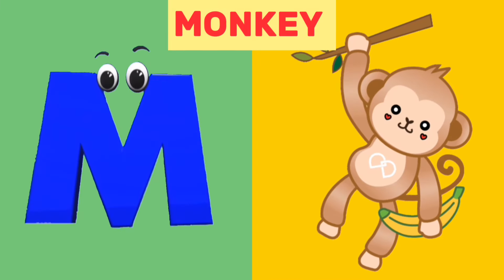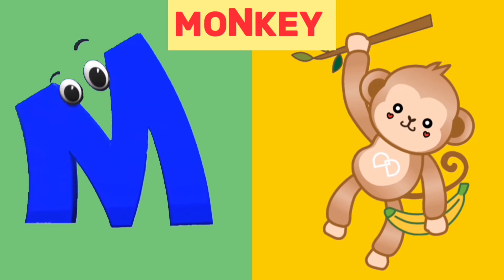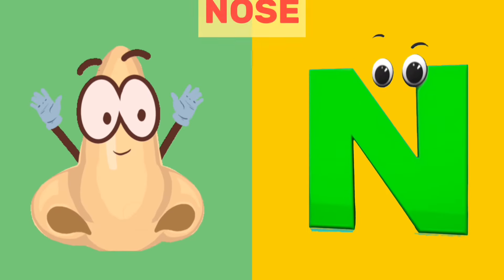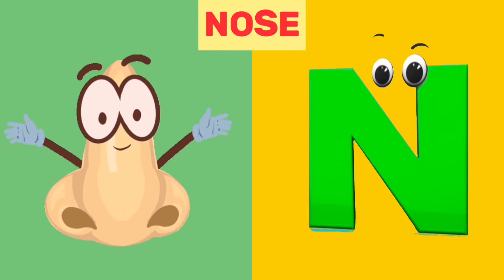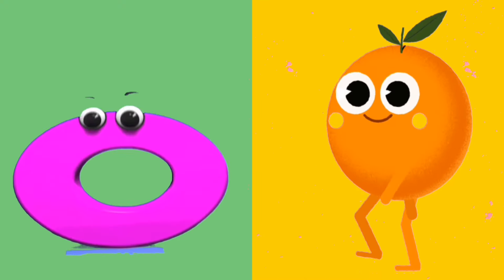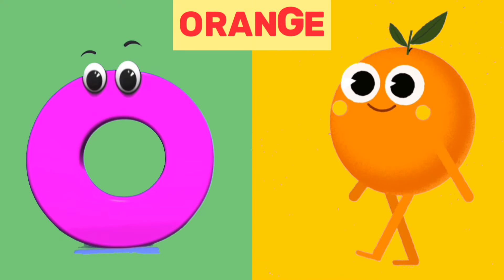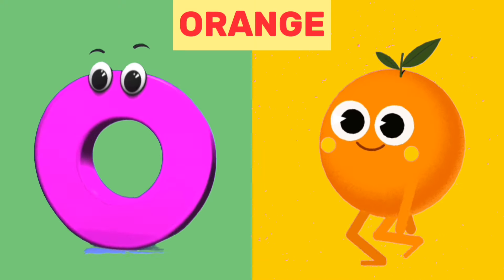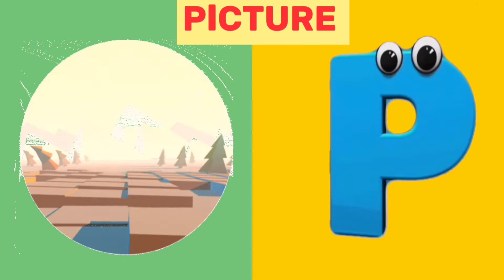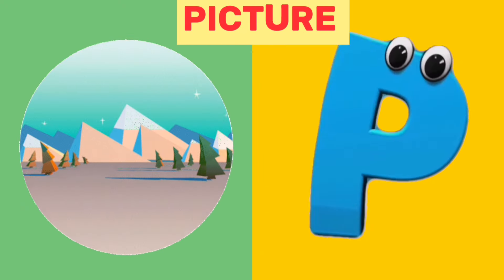M is for monkey, m, monkey. N is for nose, n, nose. O is for orange, o, orange. P is for picture, p, picture.